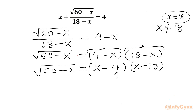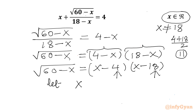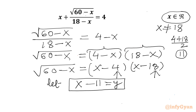Now I will take the average or mean value of the two numbers 4 and 18. So (4 plus 18) over 2 gives us 22 over 2, which is 11. This gives us a clue for substitution. So let us consider x minus 11 equal to y, or x is equal to y plus 11.